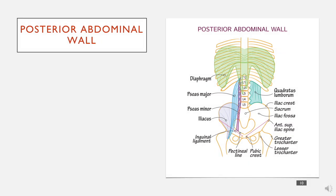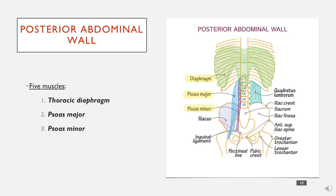The posterior abdominal wall is quite simple — it's only made up of five muscles. First is the diaphragm, which is also the superior border of the abdominal cavity. The psoas major is a long muscle that runs from the vertebrae all the way down to the leg. The psoas minor is similar but thinner. Quadratus lumborum is a broad muscle making up your back. And iliacus attaches from the iliac crest onto the leg, fusing with psoas major to become iliopsoas as it inserts.